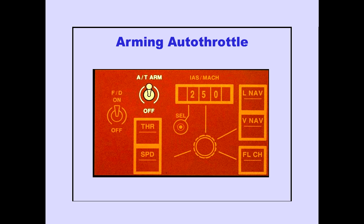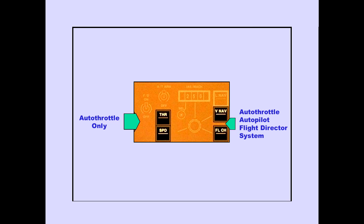The autothrottle arm switch is a two-position switch. The arm position arms the autothrottle system for activation. These are the four autothrottle select switches. The thrust and speed switches control only the autothrottle. The VNAV and flight level change switches affect both the autothrottle and the autopilot flight director system.